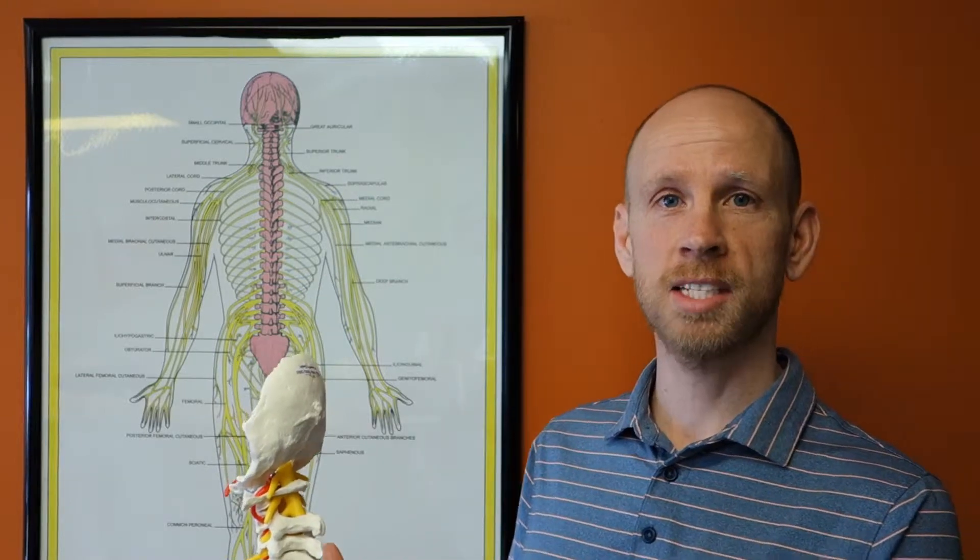So we got some x-rays taken, and I want you to look at what we found. Here's a normal neck. The spaces between the bones are all the same, and the bones have rounded corners.